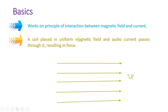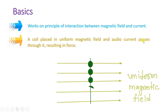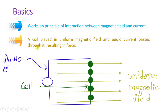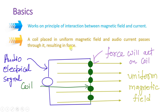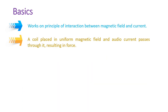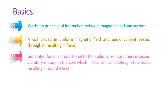A coil is placed in a uniform magnetic field and an audio current is passed through it. That current results in a force — either for compression or rarefaction — generating sound. The generated force is directly proportional to the audio current, hence producing vibrational motion in the coil. The diaphragm is typically of conical shape, which we will see in the diagram.